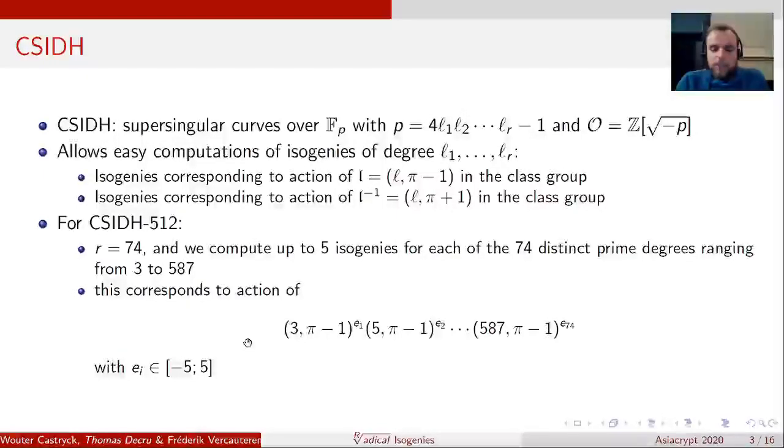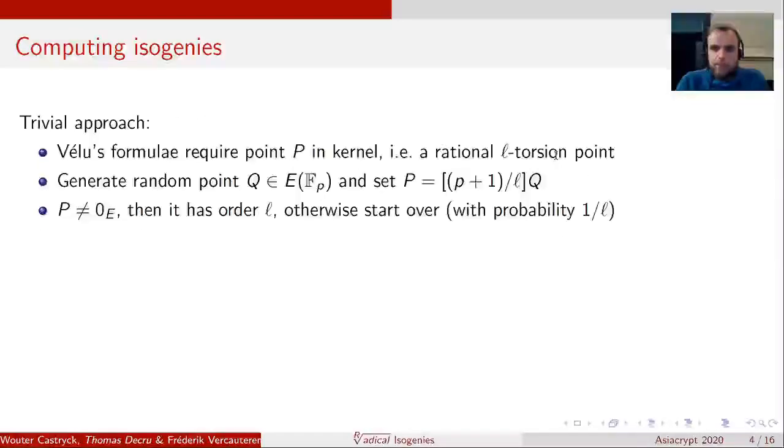Now there are many ways to compute isogenies in general. The straightforward or trivial approach is as follows. We will just have a point P as a kernel generator and then apply Vélu's formula. A small remark here that we silently assume that the exponents E_i are larger than zero, however, a very similar argument can be made if the exponents are negative. Vélu's formula are actually quite easy. They scale asymptotically with L, which is typically a small integer. However, we need a rational L-torsion point to actually apply the formulas.